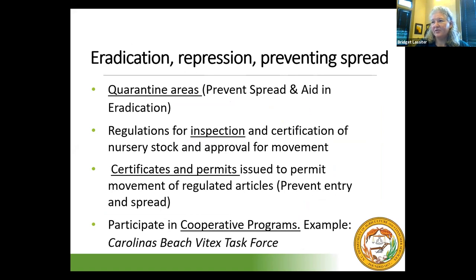Some of the things we do in our division to eradicate, repress, or prevent the spread of plants: we designate quarantine areas where we already have a bad thing but don't want to move agricultural products out. We have regulations to inspect and certify nursery stock. We also issue certificates and permits to people who want to move regulated articles — for example, when people move wheat straw from North Carolina to Florida, they have to contact us so we can inspect the product and write a certificate. We also participate in cooperative programs like the Carolinas Beach Vitex Task Force, which was very successful at getting rid of beach vitex along our coastal counties about 10 years ago.